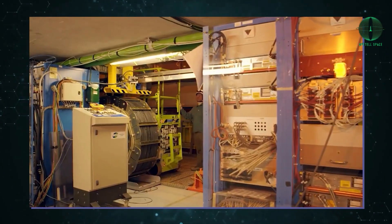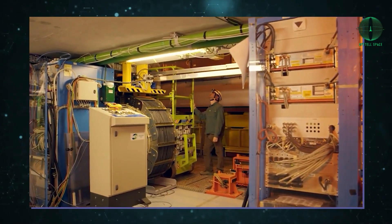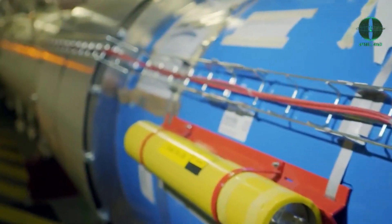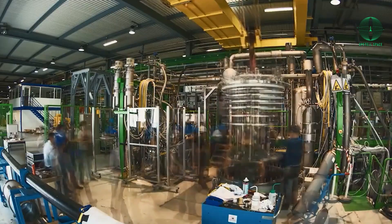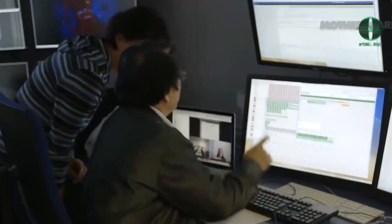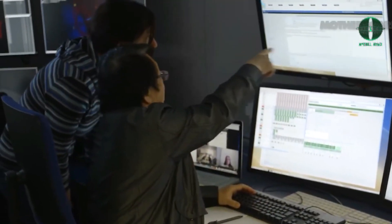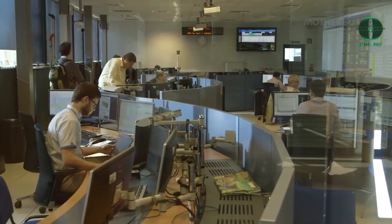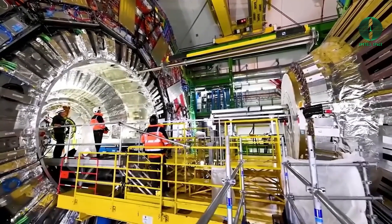CERN's specialized equipment includes particle accelerators and detectors. Particle beams receive a high-energy boost from accelerators before colliding with other beams or stationary targets. Detectors monitor and record the outcomes of these collisions. The CERN Control Center houses all accelerator controls, services, and technological infrastructure.